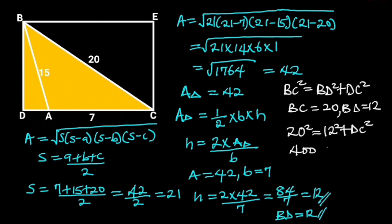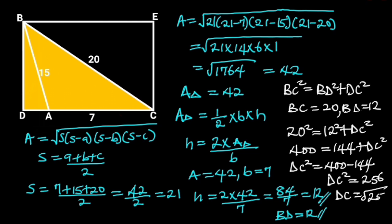20 squared is 400 and 12 squared is 144. If we make DC squared the subject, DC squared will be equal to 400 minus 144, which is equal to 256. Taking the square root of both sides will give us DC is equal to 16.